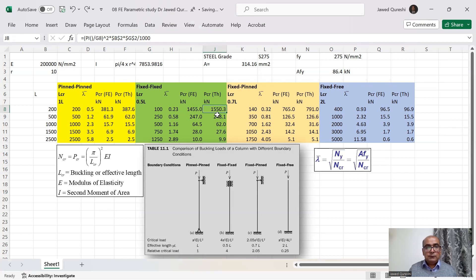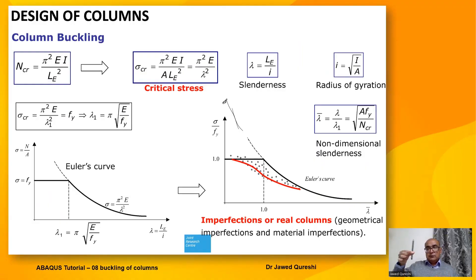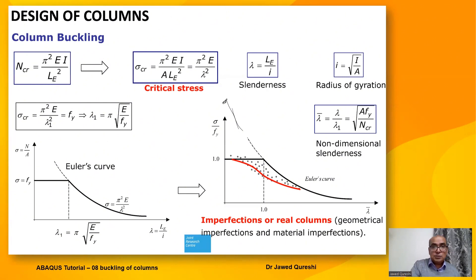From the theoretical value I got 1550 kilonewtons, which is quite close. However, remember that this is a stocky column — short and bulky. A stocky column is not going to fail by elastic critical buckling; it is going to fail by its material strength.